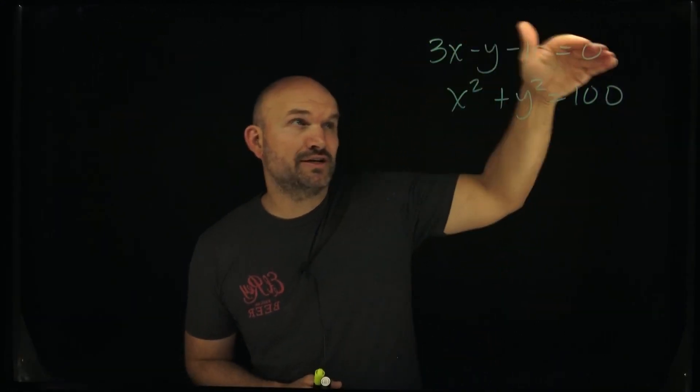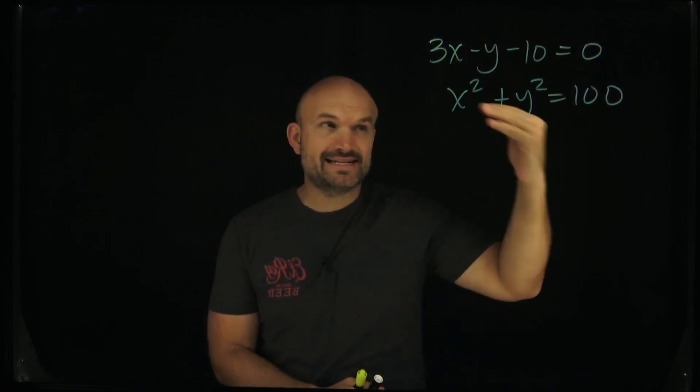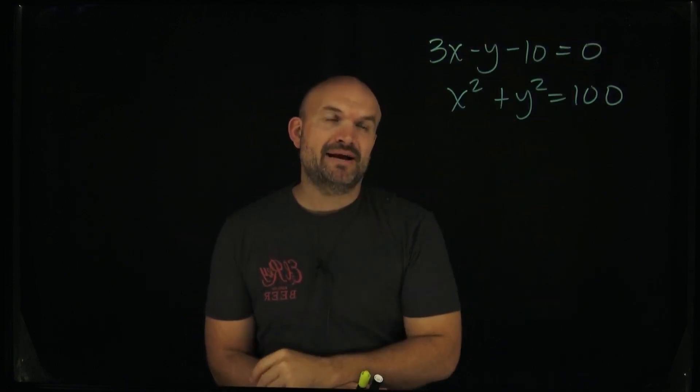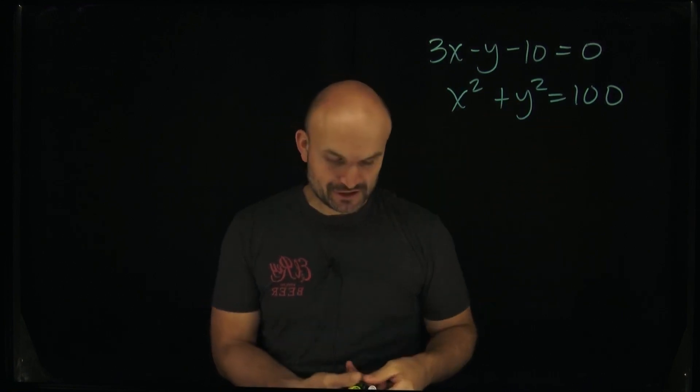I know I'm dealing with a linear equation here because you can see that both the x and the y are separated by subtraction and the power is equal to 1. Whereas here I have my x squared and y squared separated by addition with the power equal to 2.